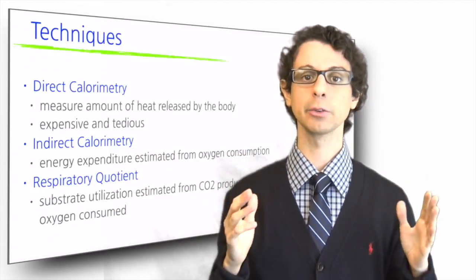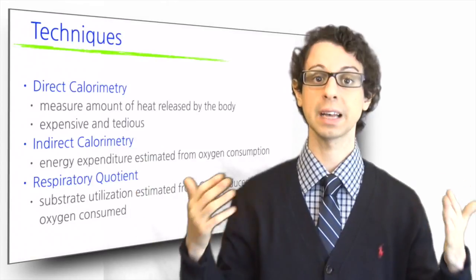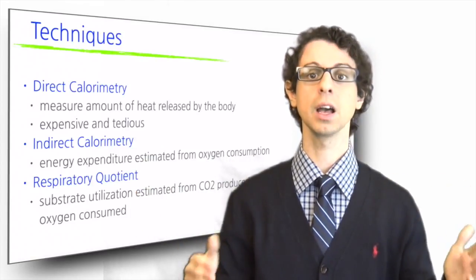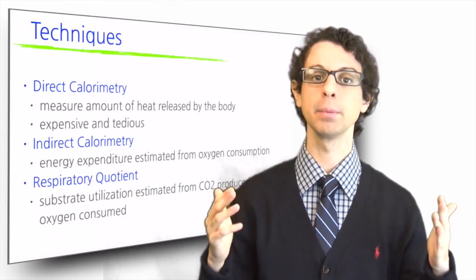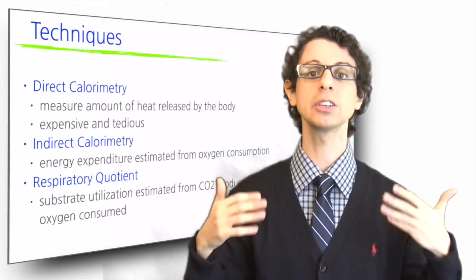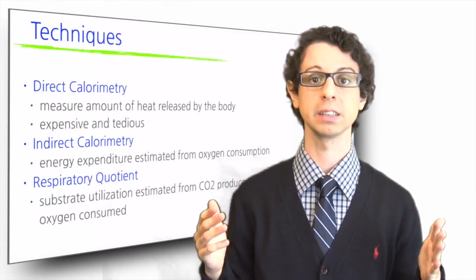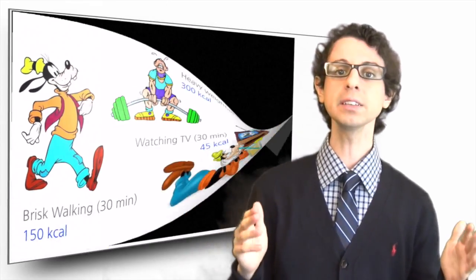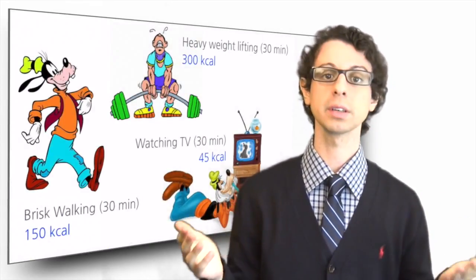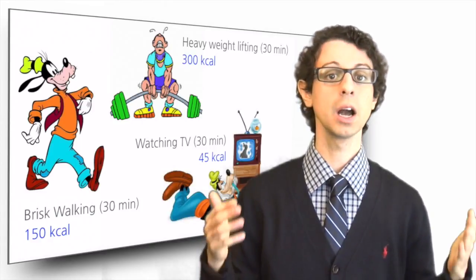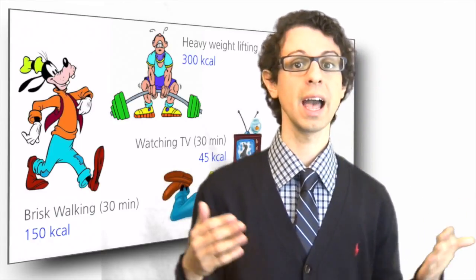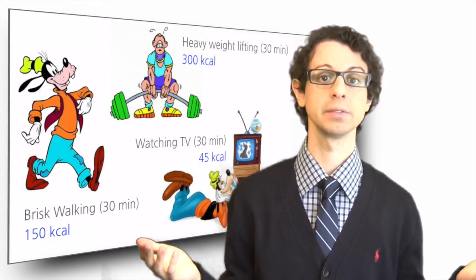By integrating indirect calorimetry measurements from a lot of subjects performing different activities, we also have built some tables that give us an indication of how much energy is approximately spent to perform different physical activities. For example, we know that brisk walking for 30 minutes burns about 150 calories, heavy weight lifting burns more than 300 calories, and watching television burns less than 50.